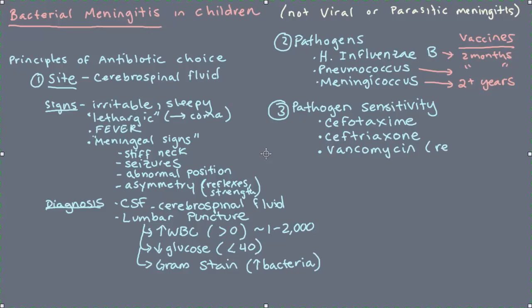We use vancomycin if we think there are resistant bugs — bugs that are resistant to the first two antibiotics mentioned — and there are lab tests to determine that. Those are the principles of antibiotic prescribing for bacterial meningitis: knowing the site of infection is the spinal fluid, knowing how to diagnose it, what the pathogens are, and what antibiotics work against those pathogens at that site. A final important question is whether these antibiotics are able to penetrate through the blood-brain barrier and get into the cerebrospinal fluid — and for those particular antibiotics, the answer is yes.